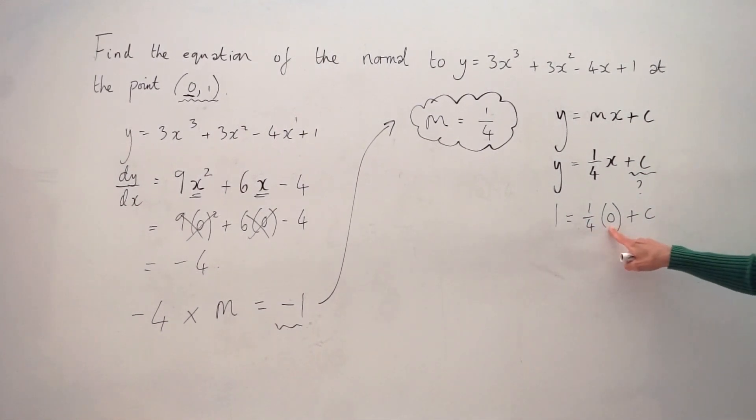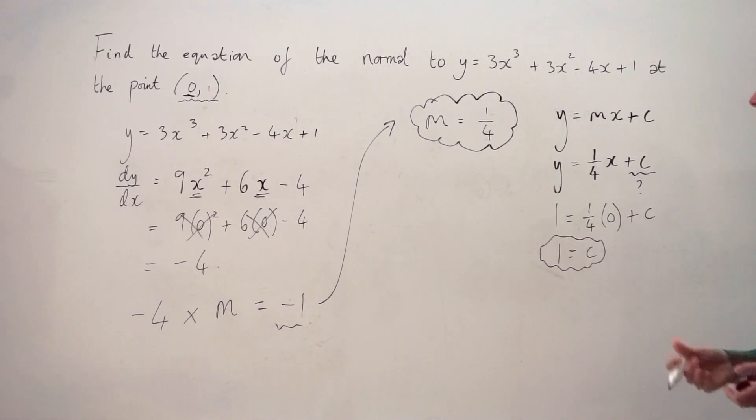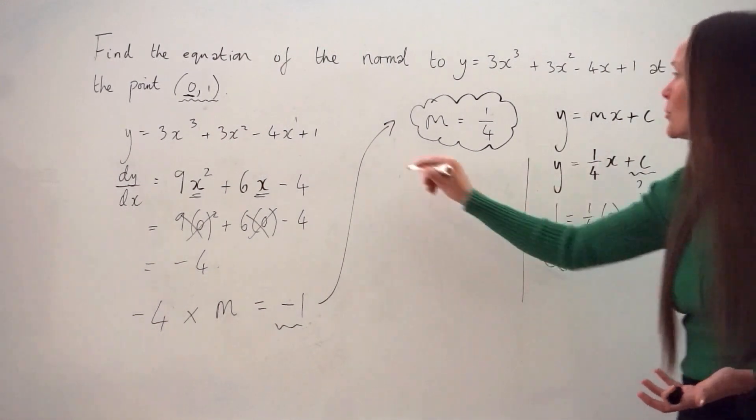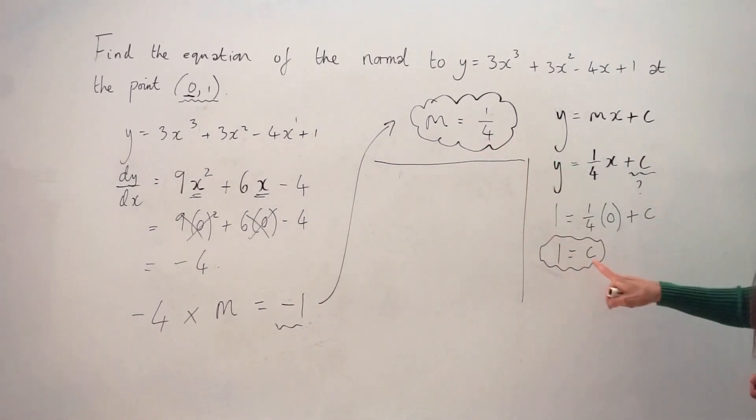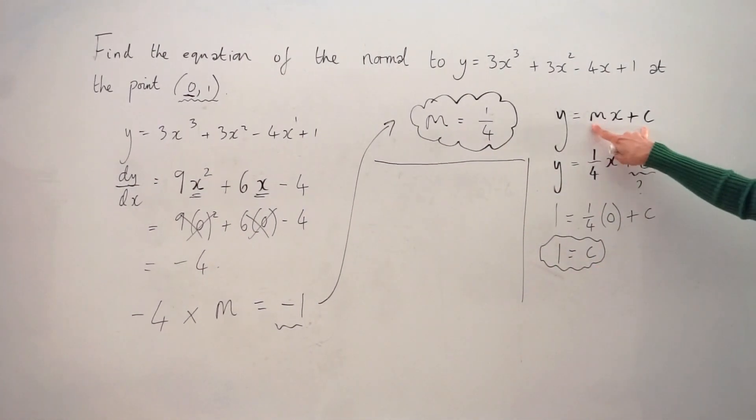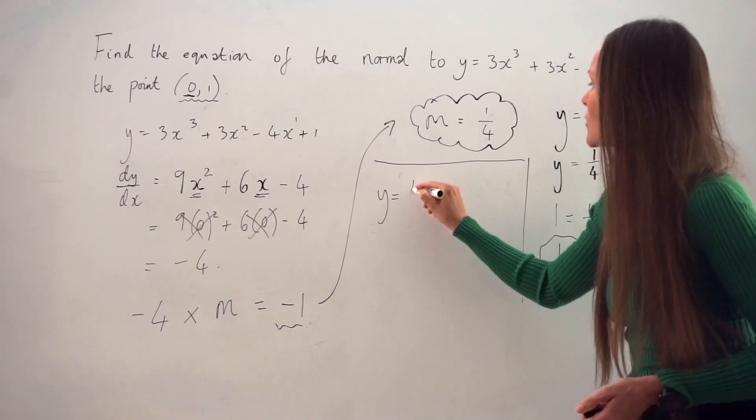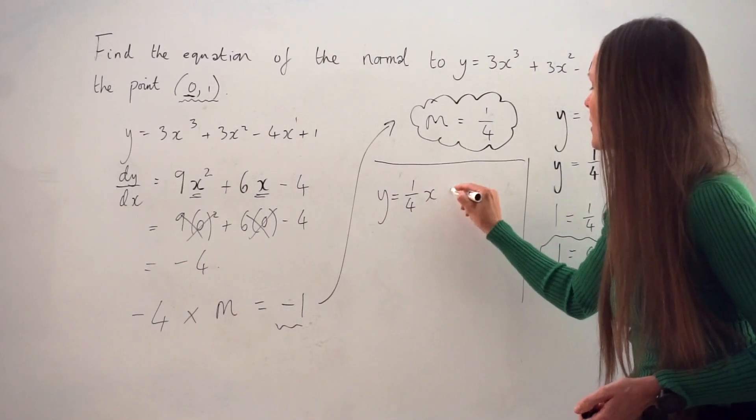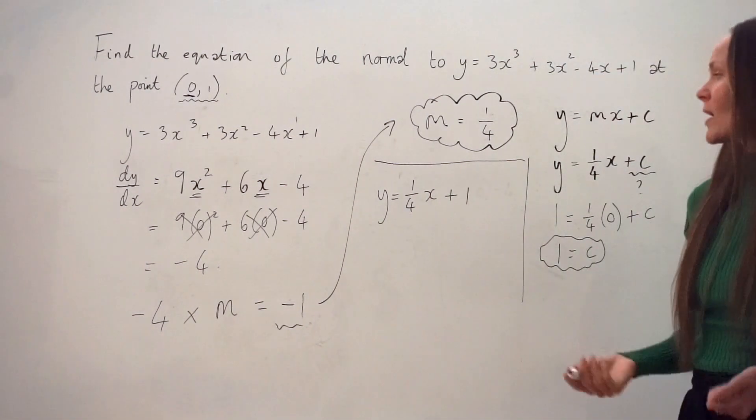And then now I can calculate the value of c. A quarter multiplied by 0 is just 0. So 1 is equal to c. So this is the y-intercept of our straight line, the normal. So now we can put it all together. We can substitute our gradient and our y-intercept back into the equation here. So that y = ¼x + 1. So this is the equation of the normal that we have to work out.